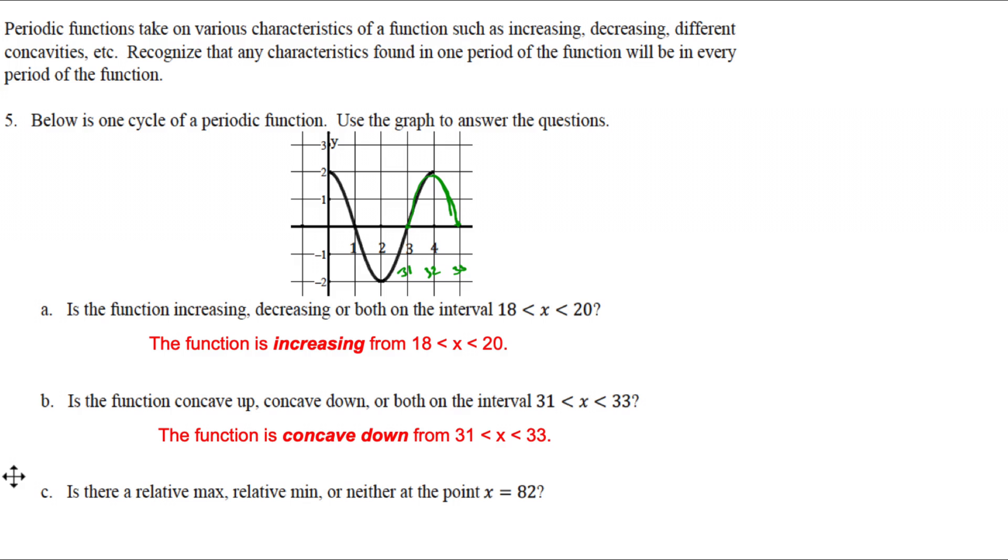And lastly, is there relative max or min or neither at the point x equals 82? And again, 82, I'm going to use the fact that I know my multiples of 4. Multiples of 4 are going to be at a max, and so I know that x equals 80 should be a max, because that's a multiple of 4. I know that right in my head. I don't even have to do anything there. So if 80 is a max, that would be like right here. Then I go over 2, 1, 2, it's going to be at a minimum. The other way you could think about it is 84 is a max, and that would be right here. But that should be a relative minimum. And that's basically it.